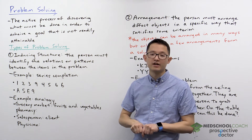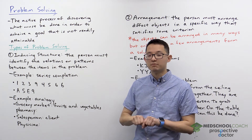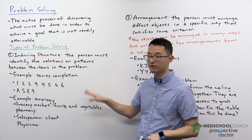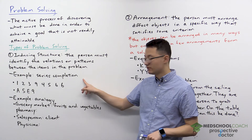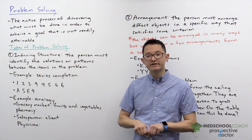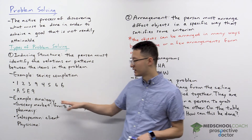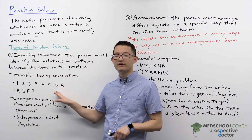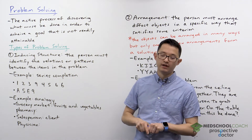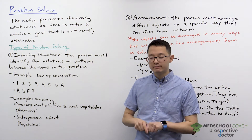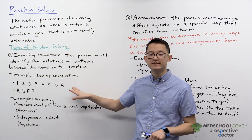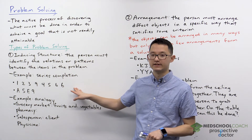In problems of inducing structure, the person must identify the relations or patterns between the items in the problem. There are many different types of problems of inducing structure. Here we have series completion. In series completion you're presented with a number of items in a series in a specific order, and you're typically asked to find out what is the next item in the series.